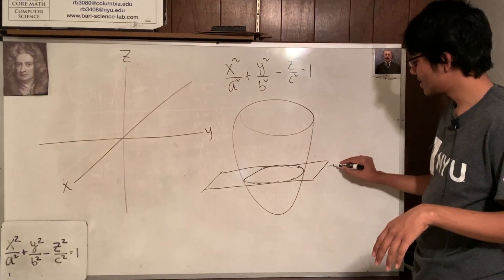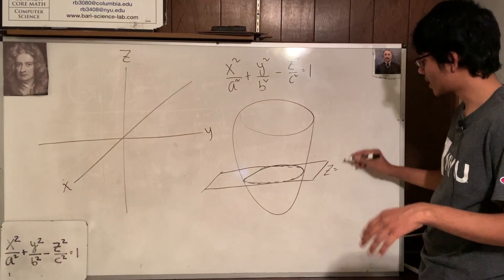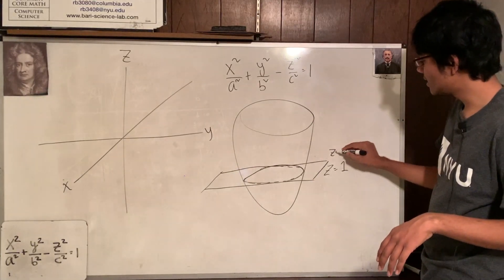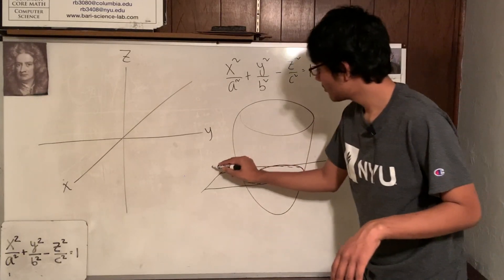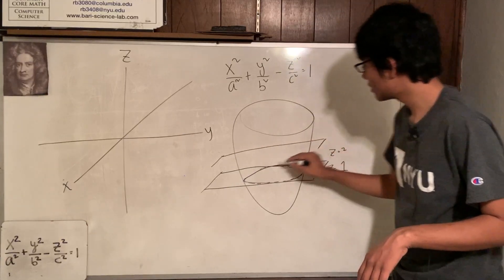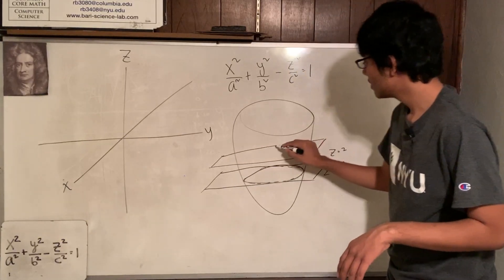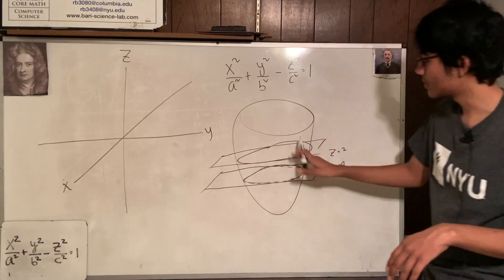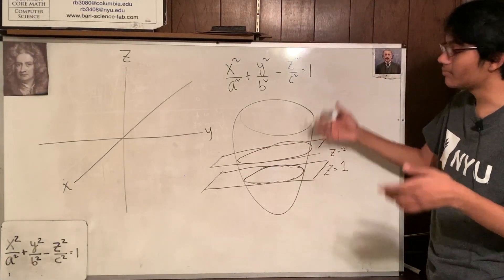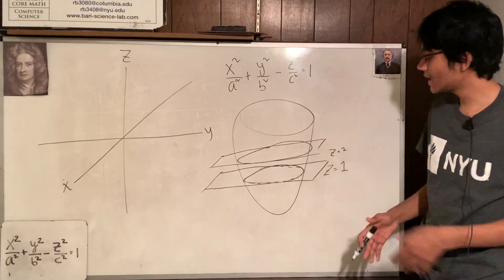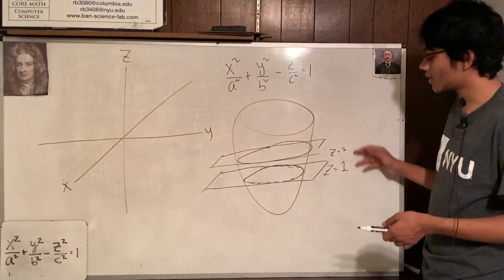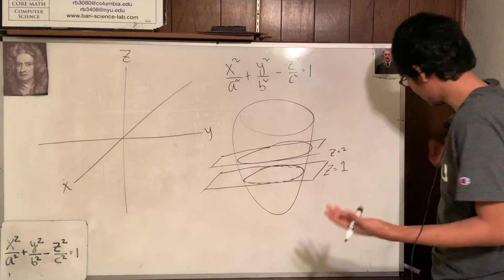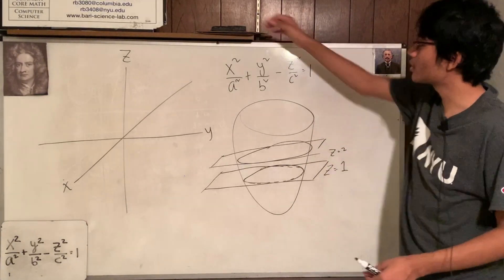For example, we might be setting the variable Z to a constant of 1. If I set Z to 2, maybe my plane would come up higher and intersect a bigger circle. If I increase my Z, I'll get bigger and bigger circles. So the idea is: you set one of the variables to a constant and then you just see what shape you get. That's the approach you'll be taking.